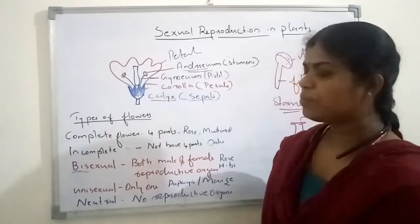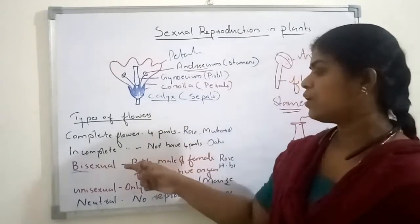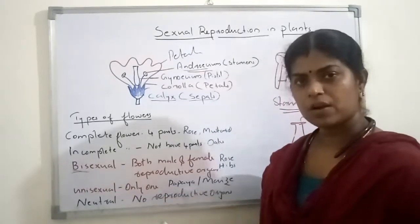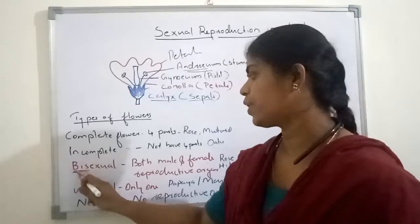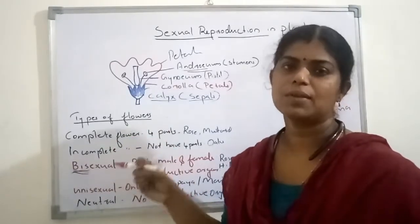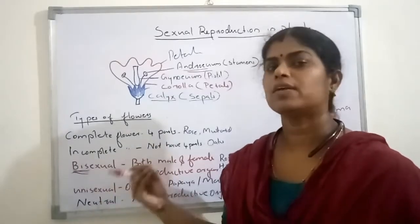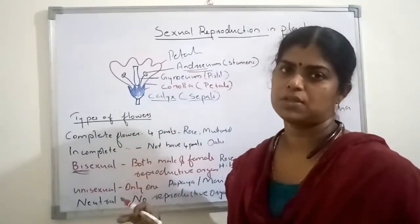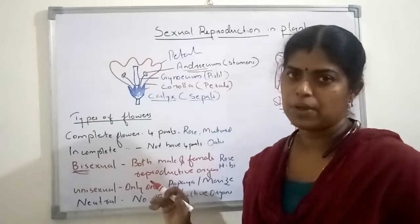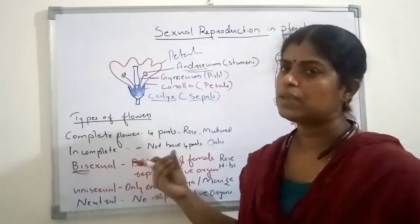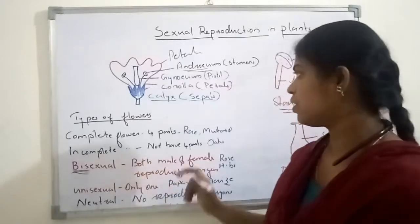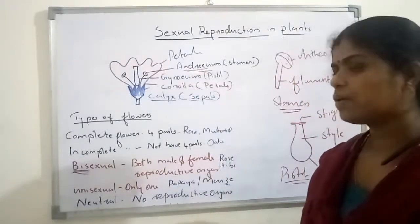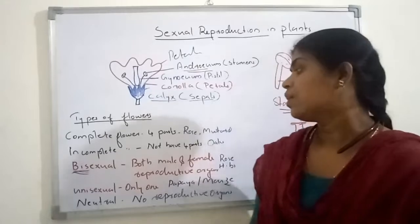According to the presence of the reproductive organs, we can classify flowers into bisexual, unisexual, and neutral flowers. Bisexual flower — 'bi' means two — so if the flower has both the male and the female reproductive organs, we call it a bisexual flower. Within the flower, both androecium and gynoecium are present. Androecium is the male part, gynoecium is the female part. Both are present in a single flower. Rose and hibiscus are examples of bisexual flowers.